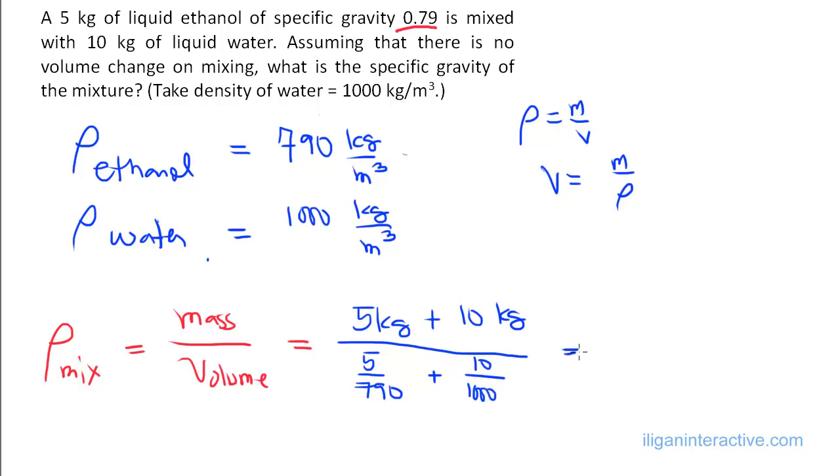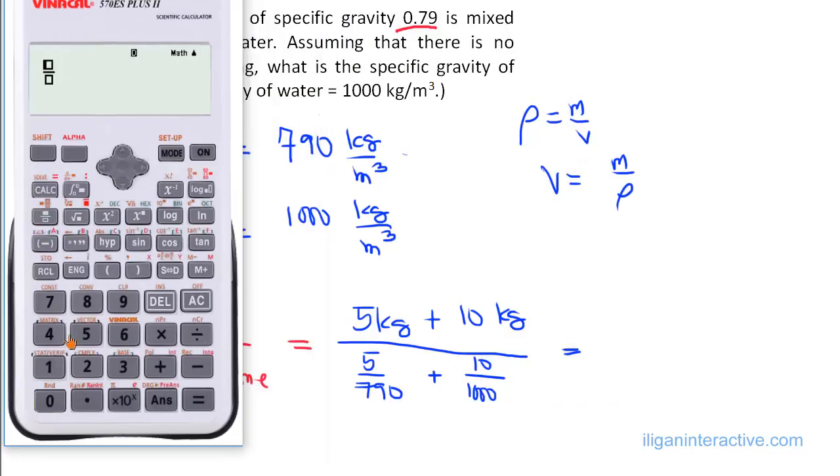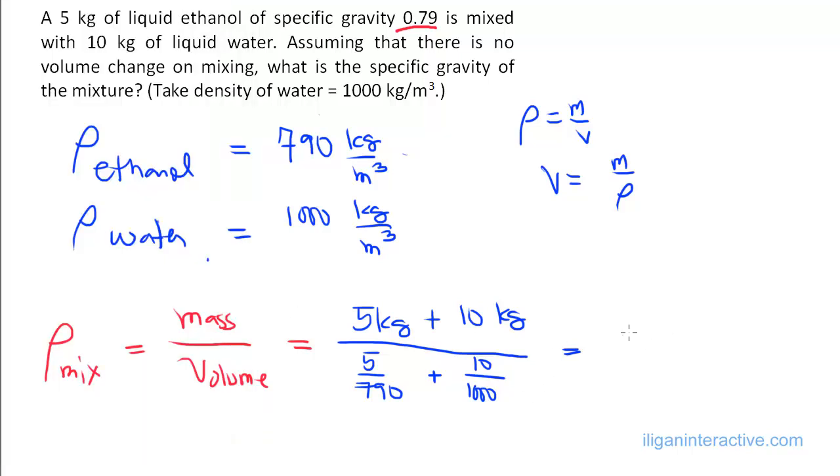Okay, so with that, let's do the math. The numerator is 15, the denominator is 5 over 790 plus 10 over 1000. We will be left with 918.6, 918.6. The unit, of course, is kilogram per cubic meter. This is density.